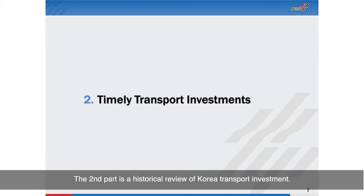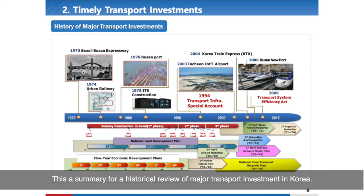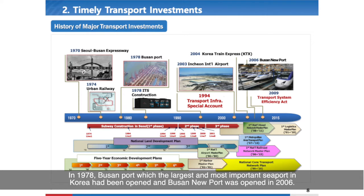The second part is the historical review of Korea's transport investment. This is a summary of the major transport investments in Korea. In 1970, the Seoul-Busan Expressway was opened. In 1978, Busan Port, which is the largest and most important seaport in Korea, was opened.